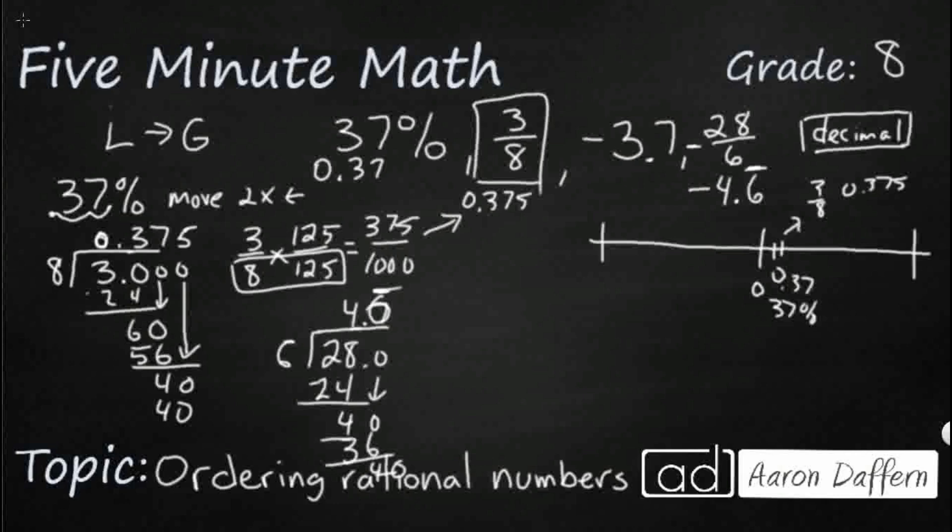So now I can plot everything here. So I'm going to put, remember the negatives, the bigger the number is negative, the farther away it is from 0. So I'm going to put my negative 4.6 repeating out here. And then somewhere right around here, maybe I'll do my negative 3 sevenths. And that's how we order numbers from least to greatest that are rational.